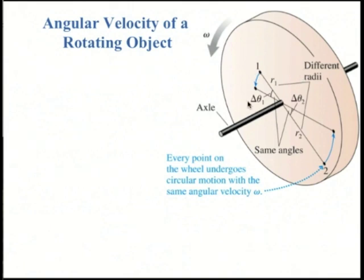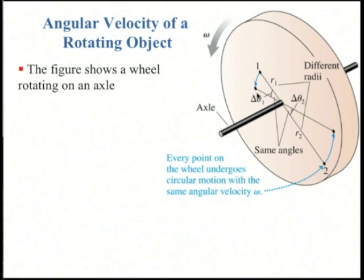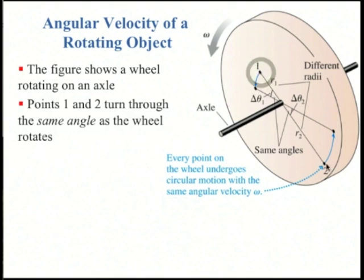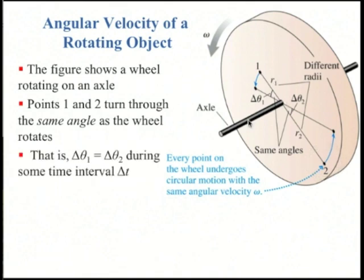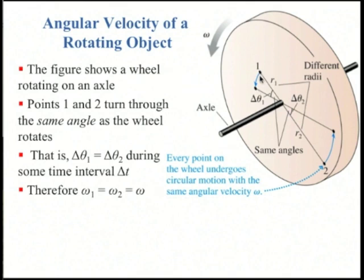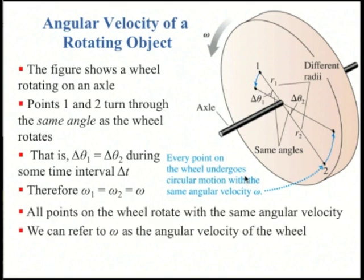Now, let's talk about objects that are rotating or spinning. Here is a disc or wheel spinning around an axle. Looking at two points — point 1 close to the axle and point 2 further out — over the same time interval delta t, both pass through the same angle. By the x-rule, delta theta 1 equals delta theta 2. Both points sweep out the same angle in the same time, so omega 1 equals omega 2. Therefore, omega is the angular velocity of the entire wheel.